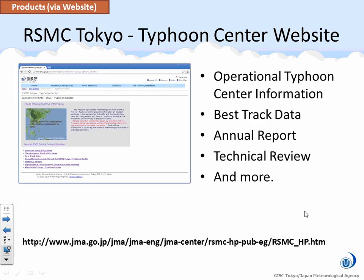This is our RSMC Tokyo Typhoon Center website. You can visit this website from the JMA homepage in English or by entering the URL directly. From this page, you can access operational typhoon center information and best track data, annual reports, technical reviews, and other content.